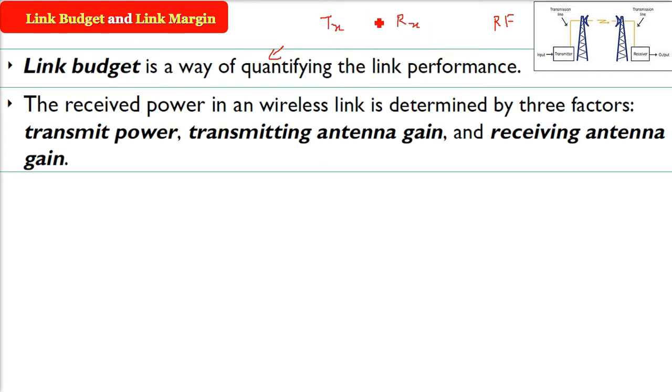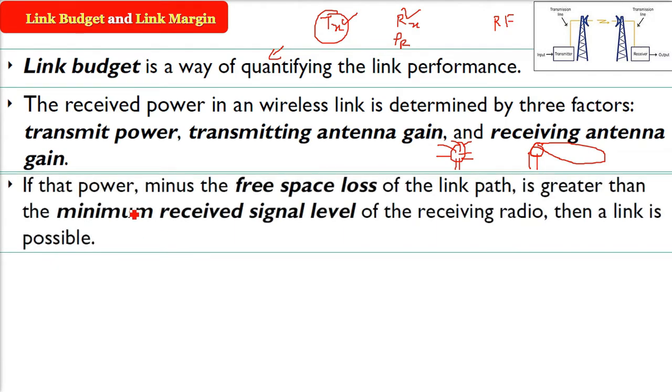When you send something in this wireless link, the received power depends on three factors: the transmit power of the sender antenna, the transmitting antenna gain, and the receiving antenna gain. Gain is the ability of the antenna to focus and send the signal in one direction. If that power minus the free space loss is greater than the minimum received signal level of the receiving radio, then the link is possible.